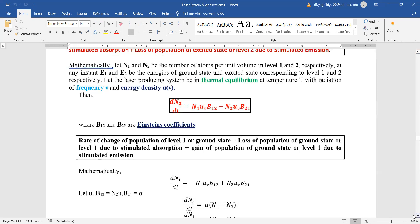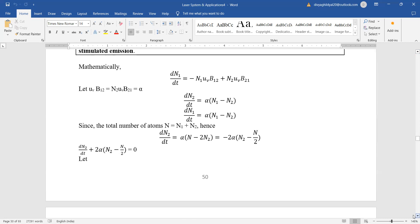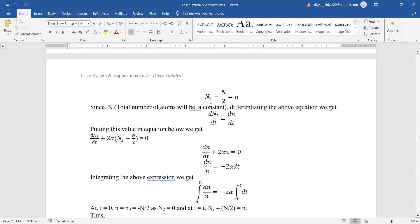Simplify the expression. Total number of atoms we are having are N1 plus N2. We will put this value here, simplify the expression, and assume N2 minus N/2 equals delta N.